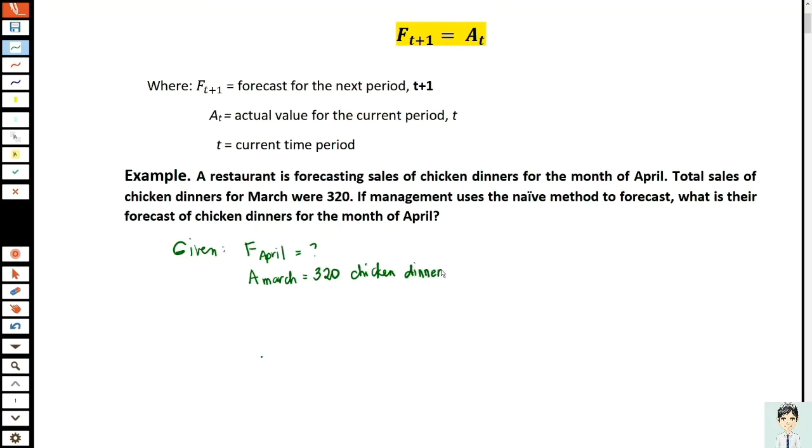Based on our formula, we have F_April. The forecast for the month of April equals the actual sales of March. Therefore, the forecast for April equals 320 chicken dinners.